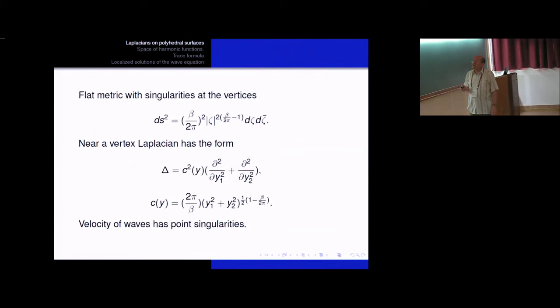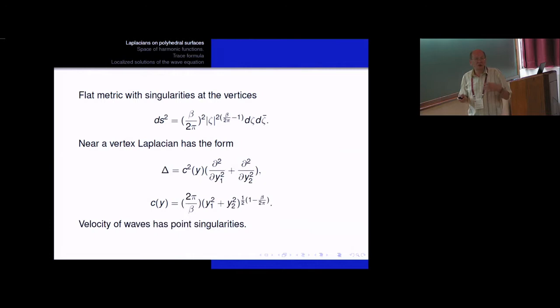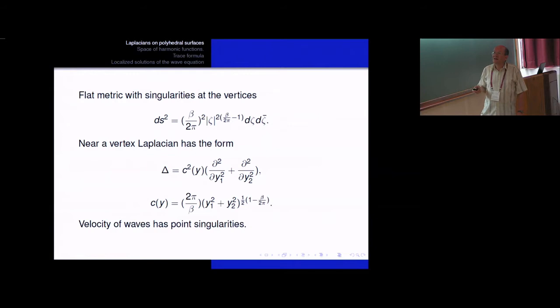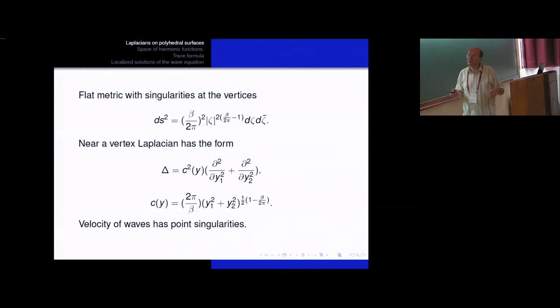In order to define the Laplacian, we have to introduce a metric matrix. This matrix has the form that in all points except vertices it is just the standard flat matrix on the plane, but near the vertices it has singularities. Here beta again is the total angle near the vertex. If we write down the Laplacian in coordinates near the vertex, it has a form like the operator appearing in the wave equation. If the total angle is less than 2π, this coefficient vanishes at the vertex; if the total angle is greater than 2π, this coefficient goes to infinity.